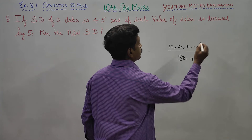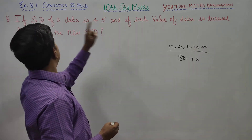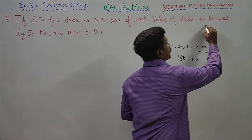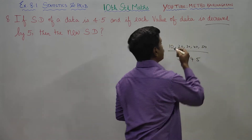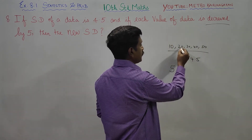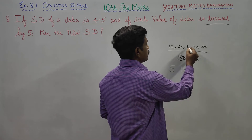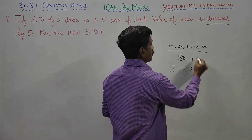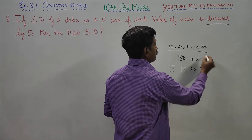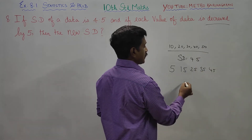Each value of the data is decreased by 5. So 10 becomes 5, 20 becomes 15, 30 becomes 25, 40 becomes 35, 50 becomes 45, and 55 becomes 45. Every value is reduced by 5.